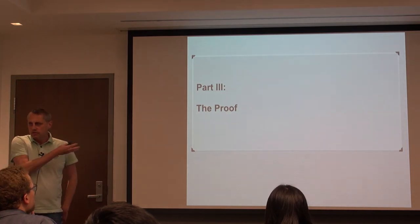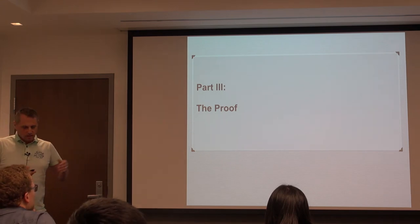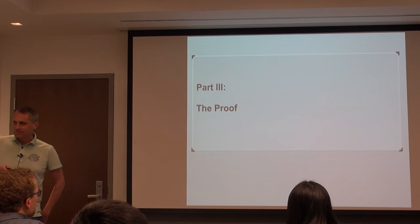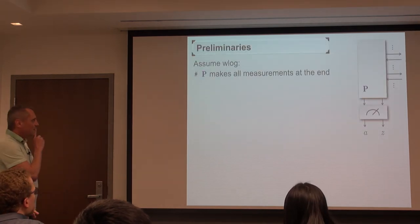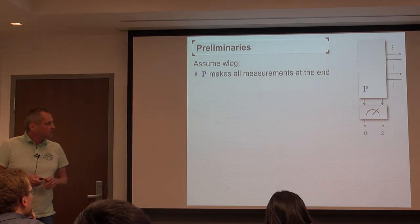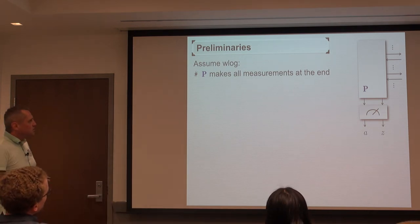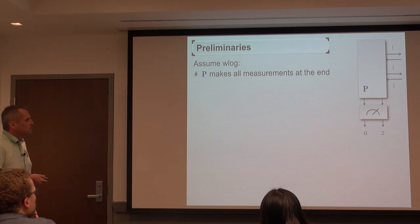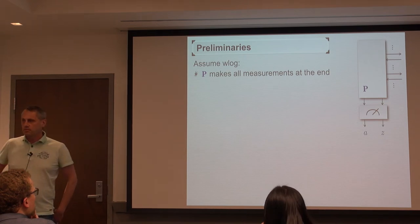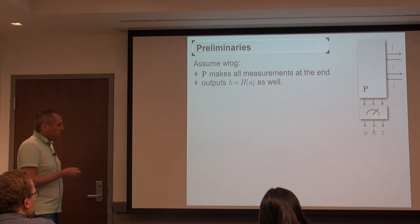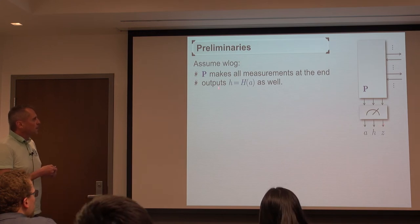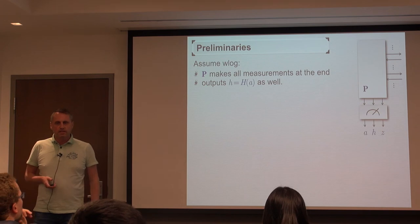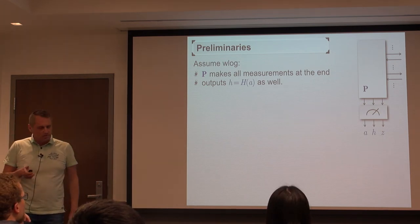Now I'll walk through the proof. First, some preliminary observations. We use a standard purification argument: without loss of generality the prover only makes measurements at the end and performs unitary operations until producing A and Z. We also assume without loss of generality that in addition to A and Z, the prover outputs the hash of A — he can do this by one more oracle query. Let phi_0 be the initial state of the prover. Write U from j to i to be the unitary describing the evolution of P's internal state plus query registers from query j to query i. Applying U from 0 to i to the initial state gives the state at query i.